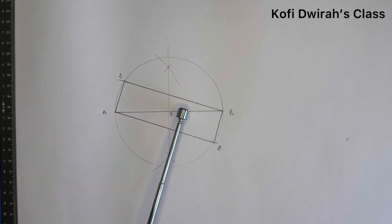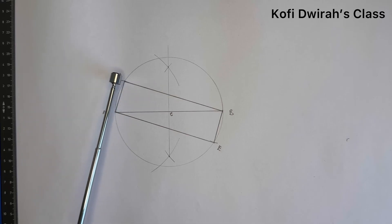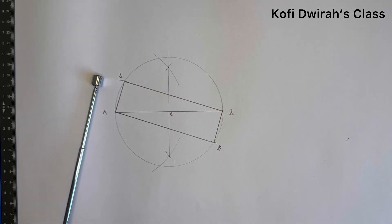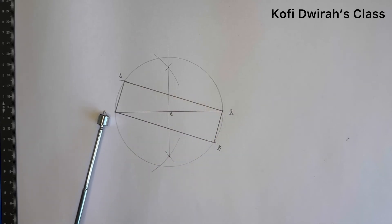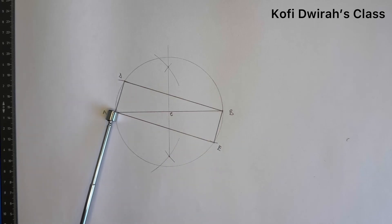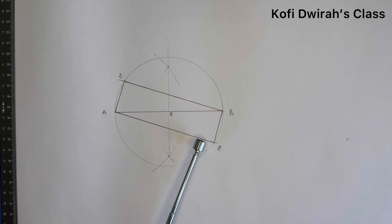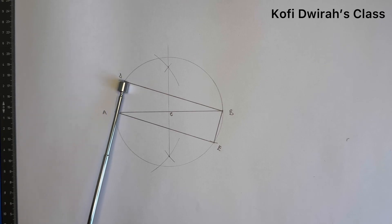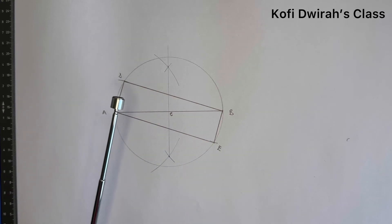After drawing the circle, you measure the side which is 3 centimeters. At point A, you open your compass to 3 centimeters or 30 millimeters and draw an arc; then at point B, with the same radius, you draw another arc. You then get point D on one side and point E on the other. At point A you draw a straight line to D, and from B you draw a straight line to E. Then you draw another line from D to B and from A to E. This is how to construct a rectangle giving the diagonal and the side.